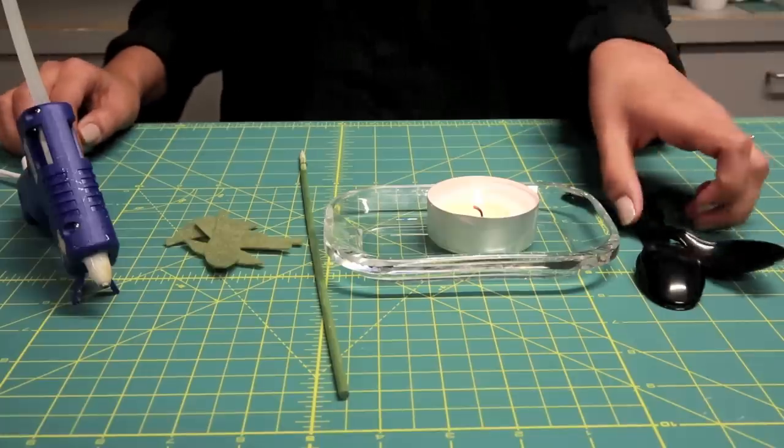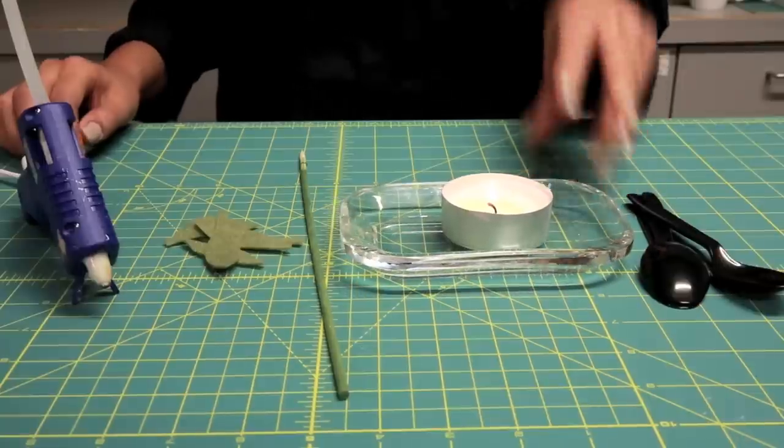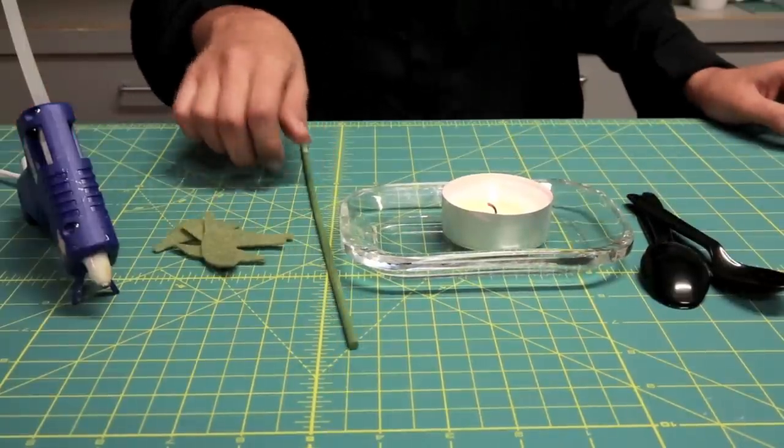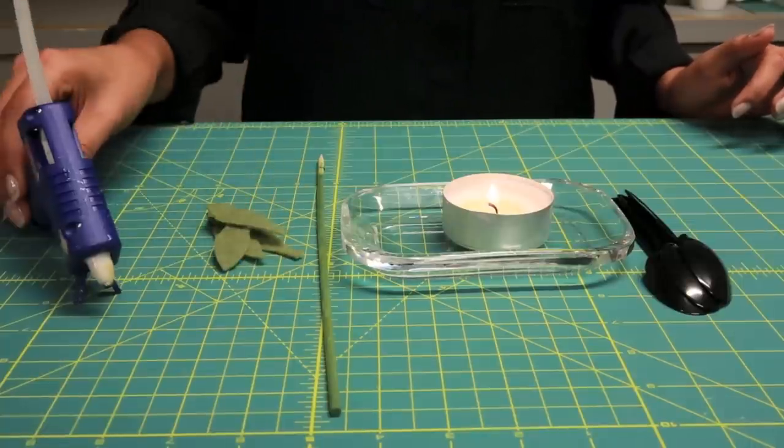What you're going to need are 12 plastic spoons, a candle, a skewer, cutouts for leaves, and a glue gun.